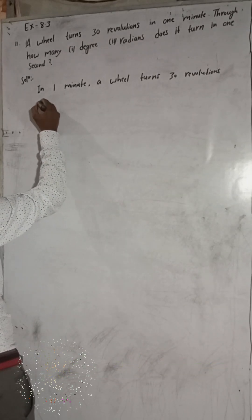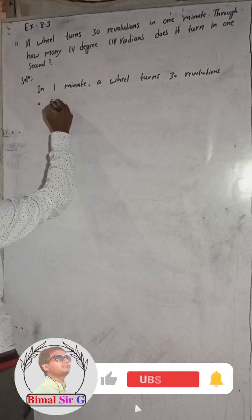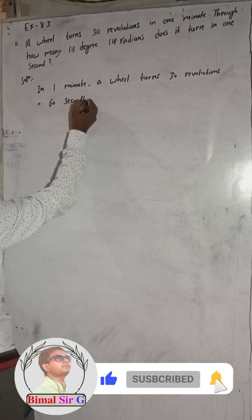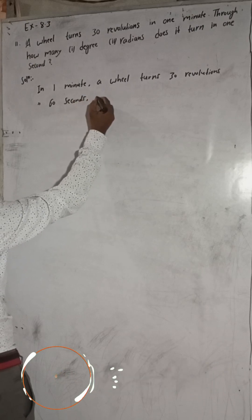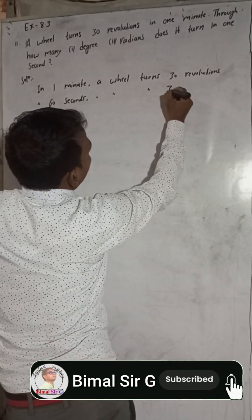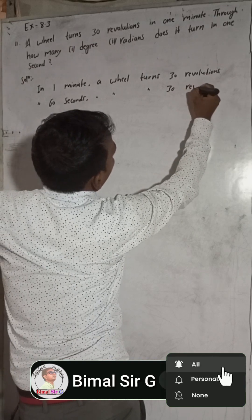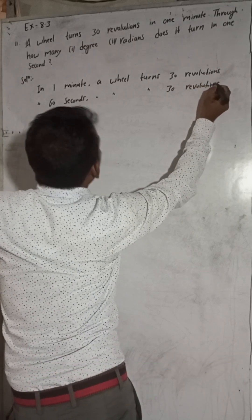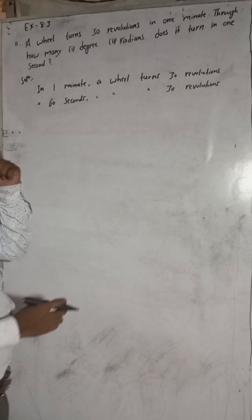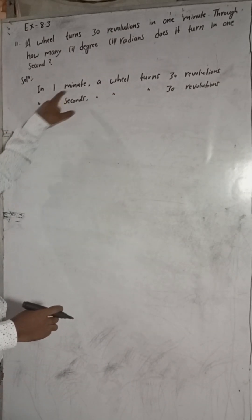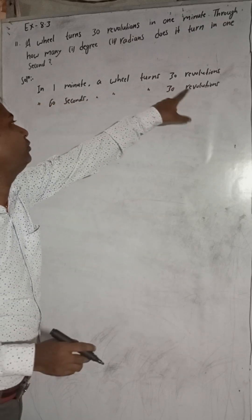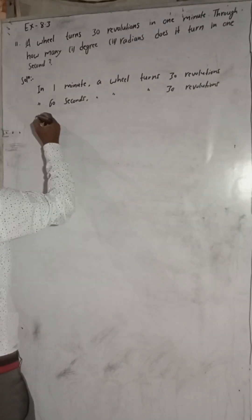In 60 seconds, our wheel turns 30 revolutions, because one minute equals 60 seconds.